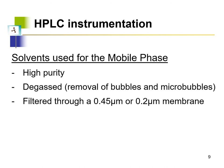HPLC solvents must meet certain criteria. First, they must be of high purity — 99.99% — because the solvent flows through a densely packed column, and even small contaminants such as metal ions can become trapped, damaging the column or causing high pressure buildup that damages the pump. For this reason, solvents are purchased as HPLC grade, meaning their purity is sufficient for use in the instrument.